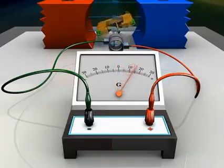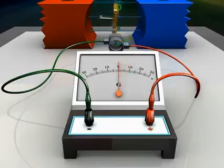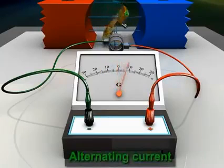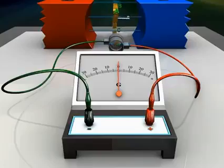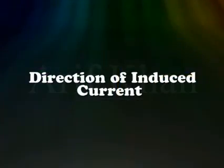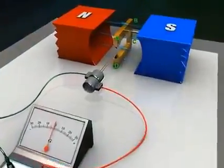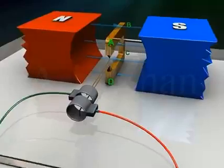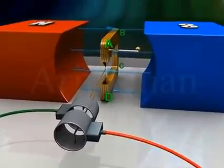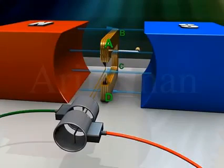Note that the galvanometer needle swings between the negative and positive values. This means that an alternating current is flowing through the galvanometer.